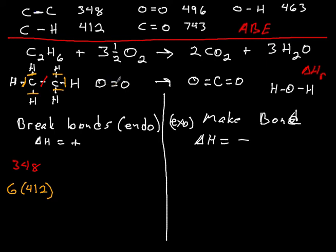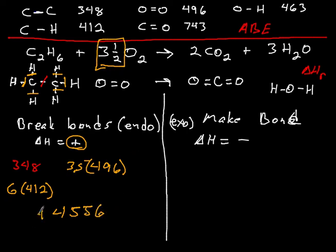And then we have the O-O bond. And the O-O bond is 496. But there are 3.5 of them. So we need to multiply that by 3.5. So all of this energy to break all of these bonds, that has to go into it. That's positive enthalpy changes. So calculate that out. And that is 4,556. And that's positive. And it's kilojoules per mole is our unit. So that energy goes in.